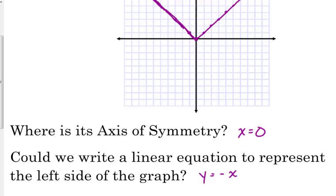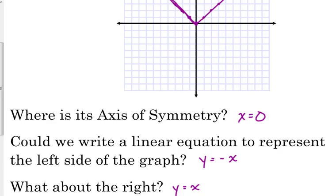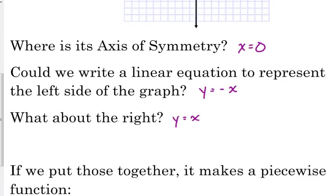How about the right side? Y equals positive x, because it has a slope of positive 1. It also has a y-intercept of 0. So, it's not in piecewise form, but we just essentially wrote the piecewise equation here.